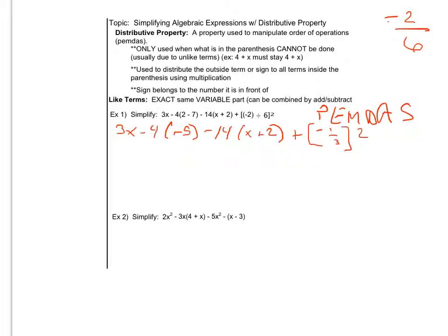So these parentheses that are causing me problems, that's where I'm going to use the distributive property. I'm going to take the negative 14 and I'm going to distribute it in using multiplication to both the x and the 2. I'm also going to go ahead and do that one exponent at the same time. Giving me 3x. I'm actually going to go ahead and multiply this. Negative 4 times negative 5 is plus 20.